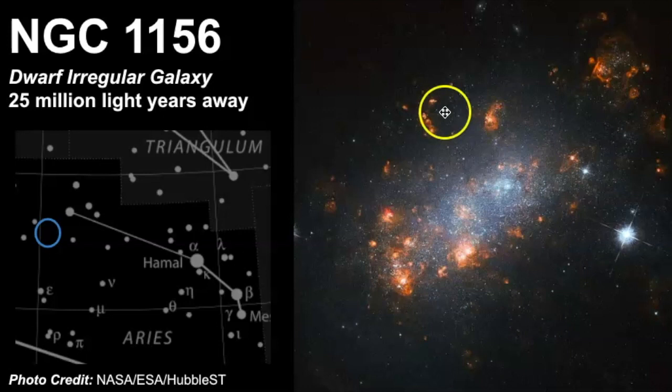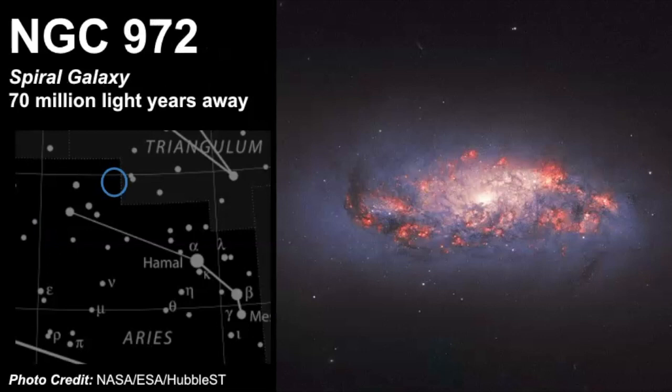Next we have NGC 972 and this is a spiral galaxy that's estimated to be 70 million light years away and here is where that galaxy would be located as well. I find this galaxy really interesting, it kind of has this orangish pink glow and that's because of the hydrogen gas that's reacting towards some of the light that's coming from these nearby new stars so it's very interesting to see.